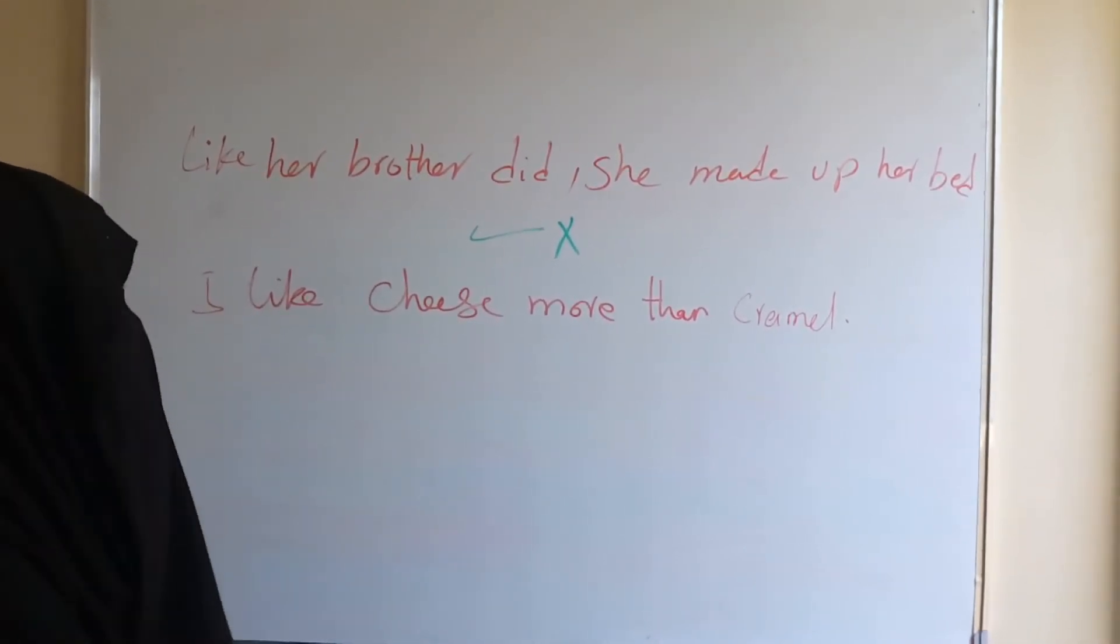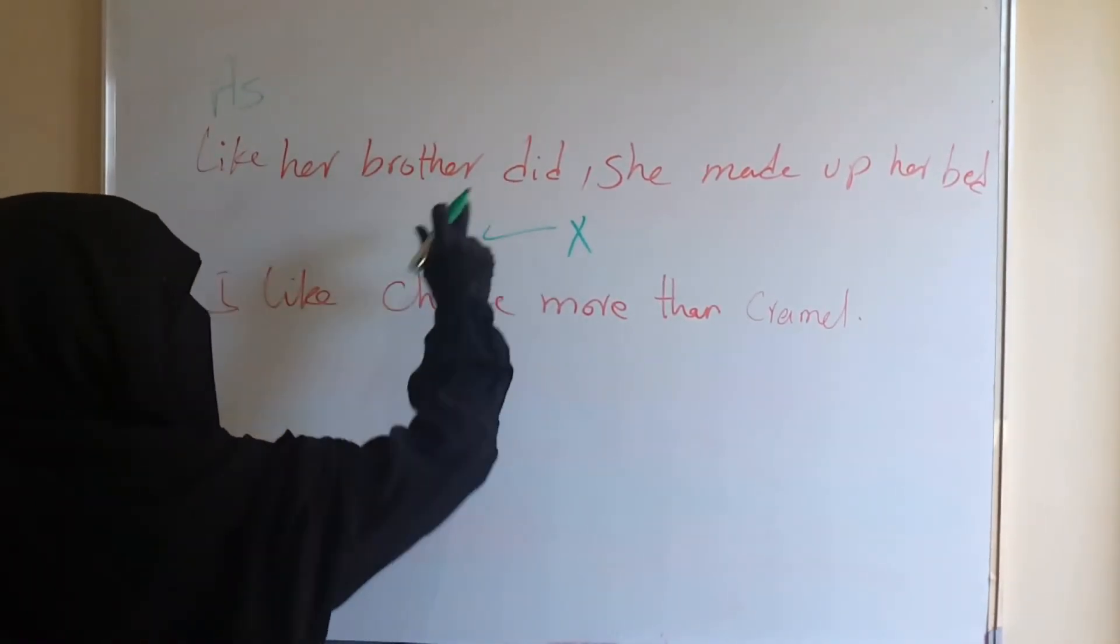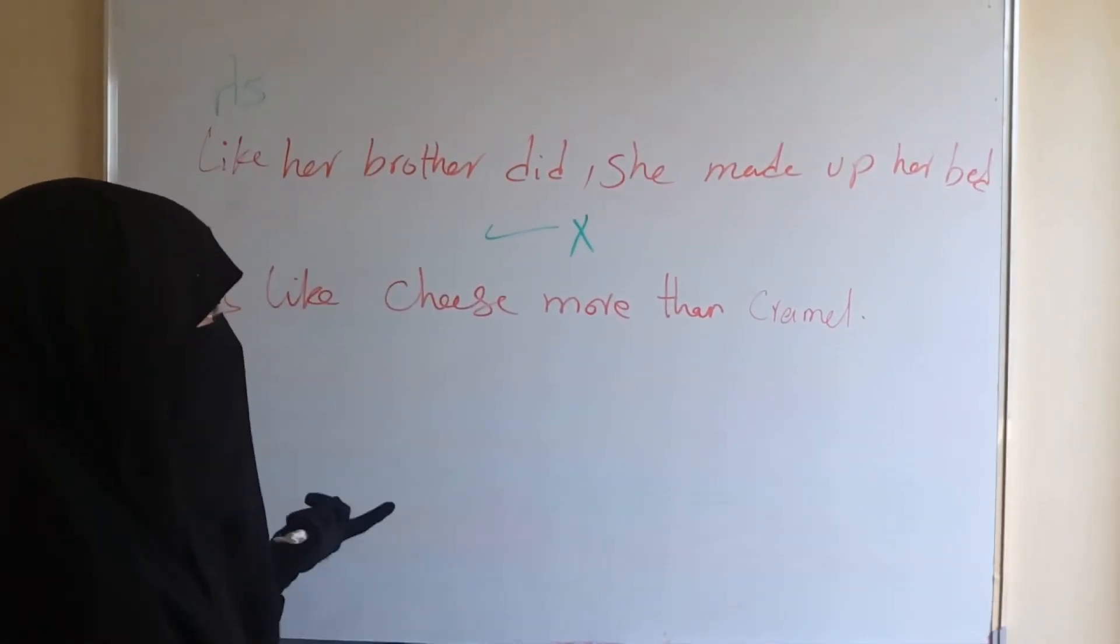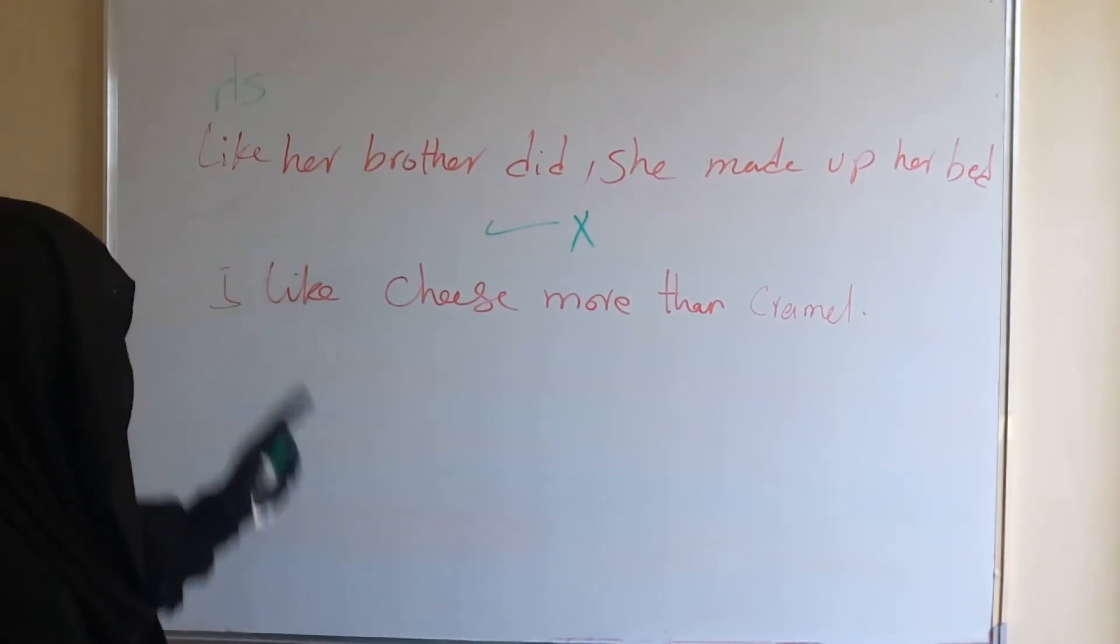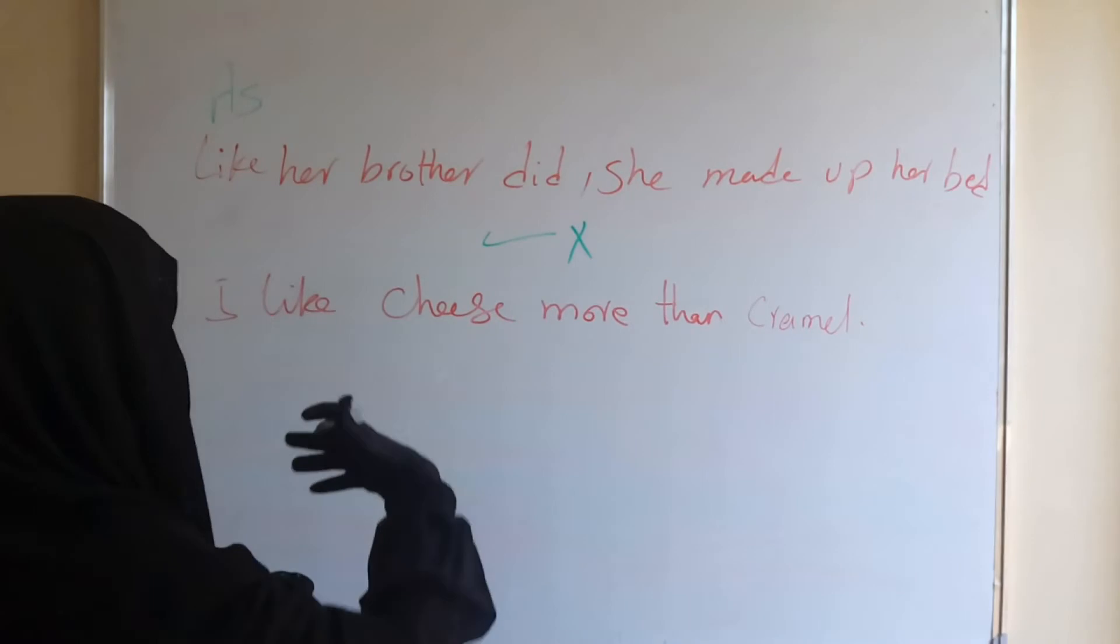We can't say this. What about 'as'? 'As her brother did.' Why can't we say 'like'? Because we can start with...